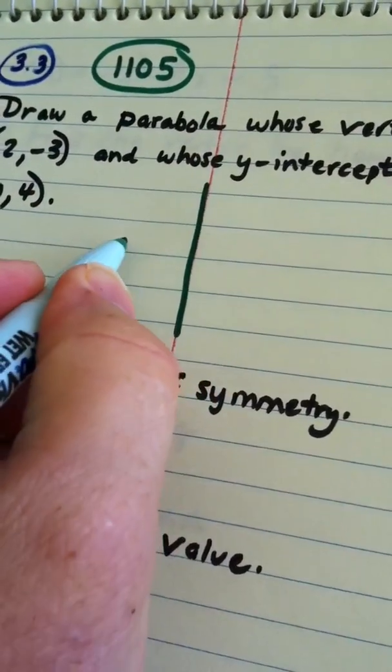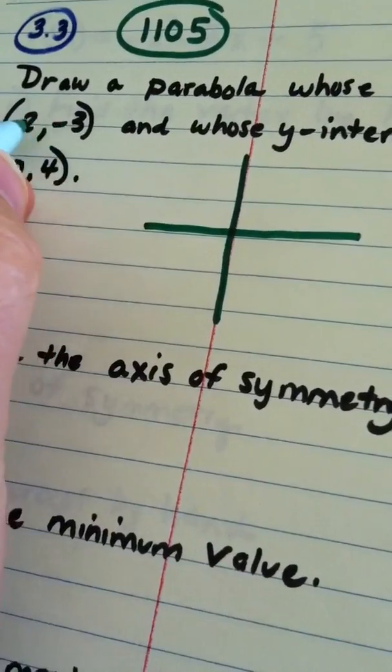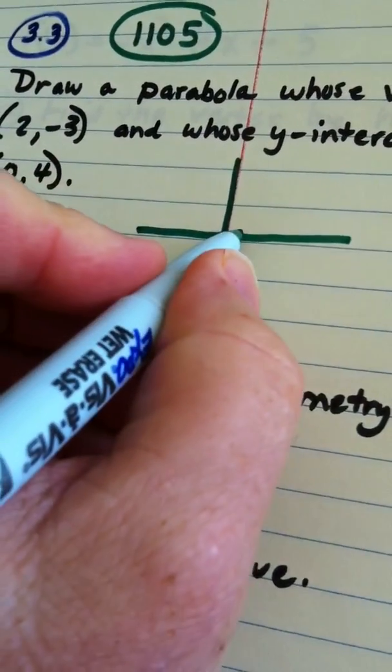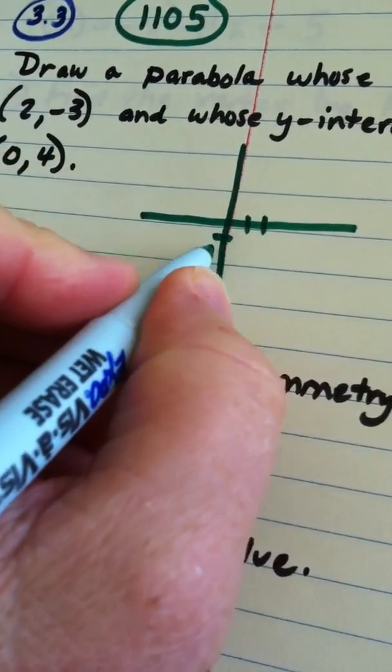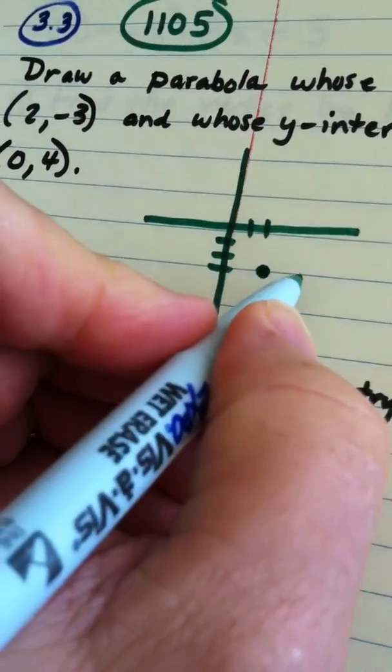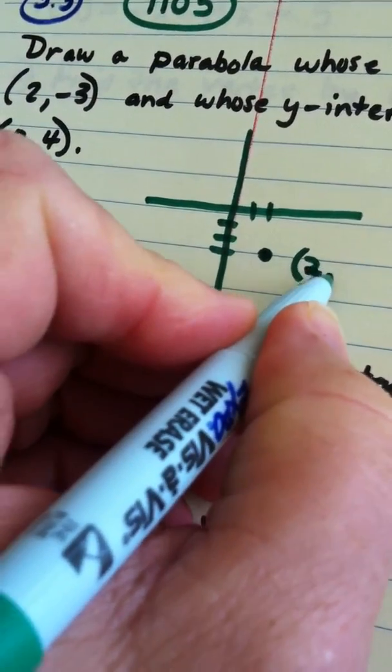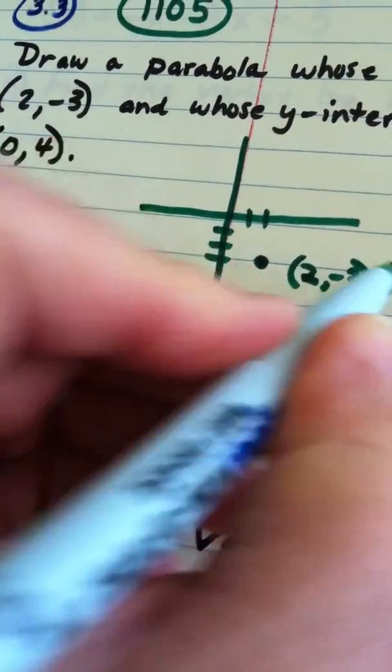So, if I draw a graph grid here, 2, negative 3 is here in quadrant 4, and that is my vertex.